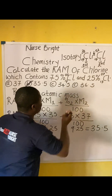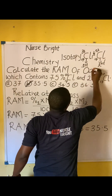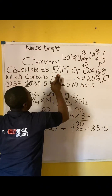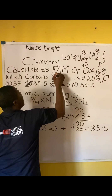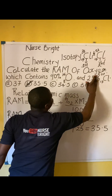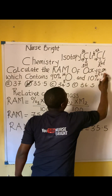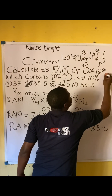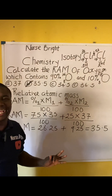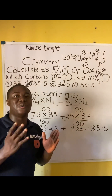Here is your practice question: instead of chlorine, we now have oxygen as the element. The isotopes are 90% oxygen-16-8 and 10% oxygen-18-8. Follow the same steps and you will get the answer. Provide your answer in the comment section. Thanks for watching.